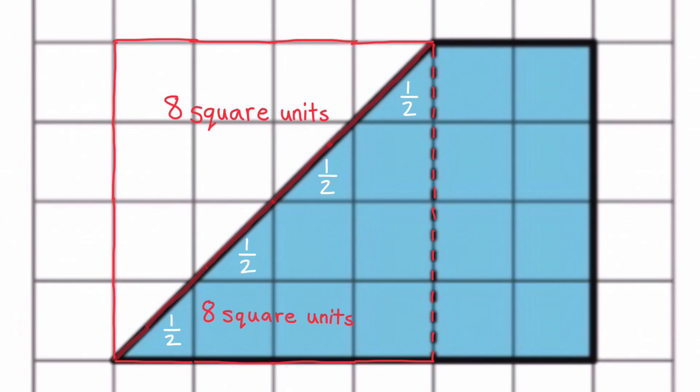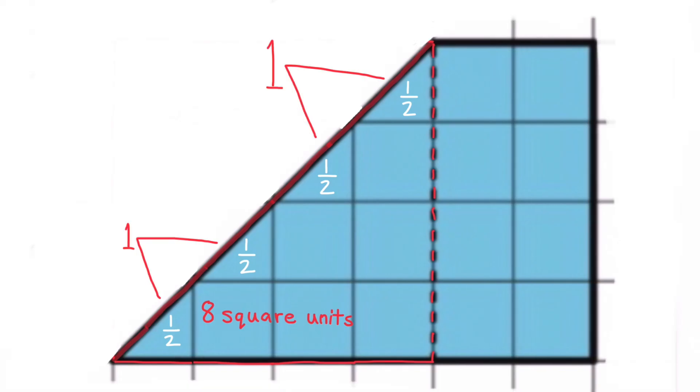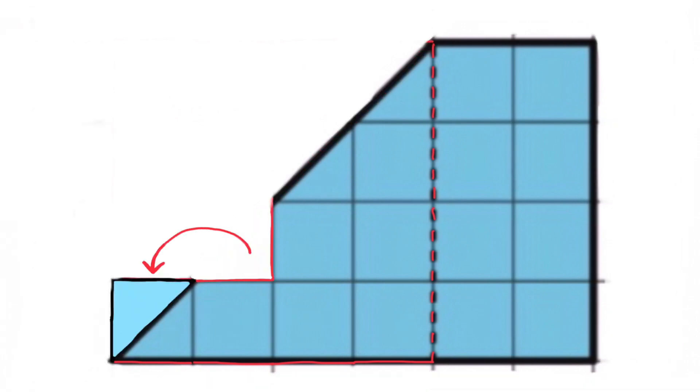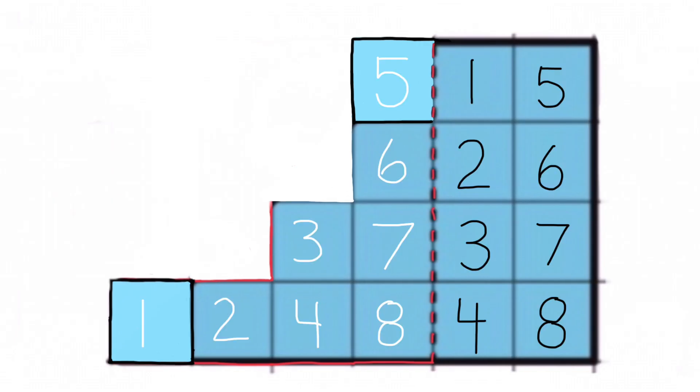Look carefully and you'll notice that this triangle consists of 4 half unit squares and 6 one unit squares. I'm going to rearrange the half units to make one unit squares. Now that I combined the half unit squares, we have all one unit squares.